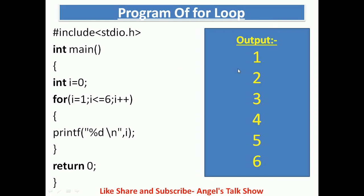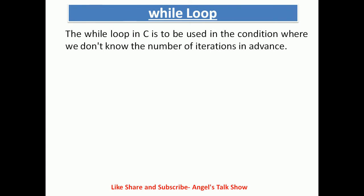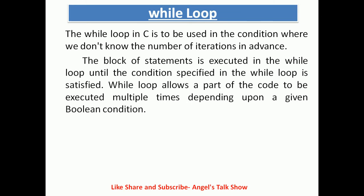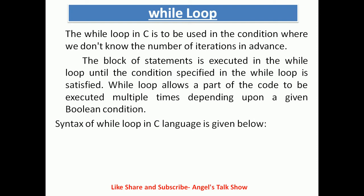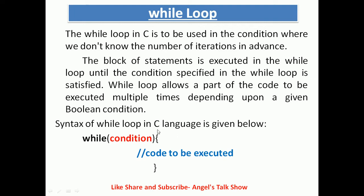While loop: the while loop in C is used in conditions where we don't know the number of iterations in advance. The block of statements is executed in the while loop until the condition specified is satisfied. The while loop allows a part of the code to be executed multiple times depending upon a given boolean condition. Here is the syntax of the while loop — this is the keyword, this is the condition, and this is the block that executes when the condition is matched.